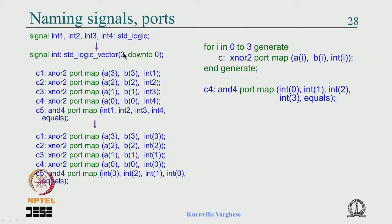Whenever there is symmetry, define the signal properly so the generate loop can work. You can write a ripple adder this way. This works not only for component instantiation — you can also write concurrent statements such as full adder equations inside a generate loop and they will be replicated.